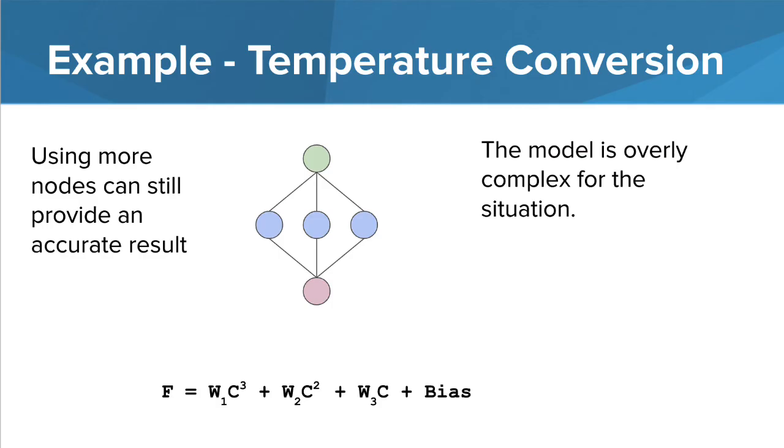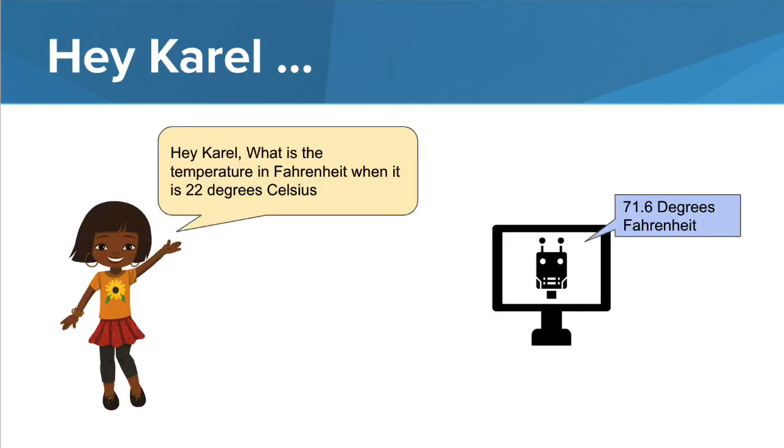But what if you didn't know that the model was linear and instead you used three nodes? The model algorithm will still produce an equation that may still predict reasonably well. However, the model would be more complicated than it needs to be. Machine learning uses the neural network to come up with an algorithm to make the computer intelligent. Now when you ask a question, you can get an answer, or at least on this particular topic.